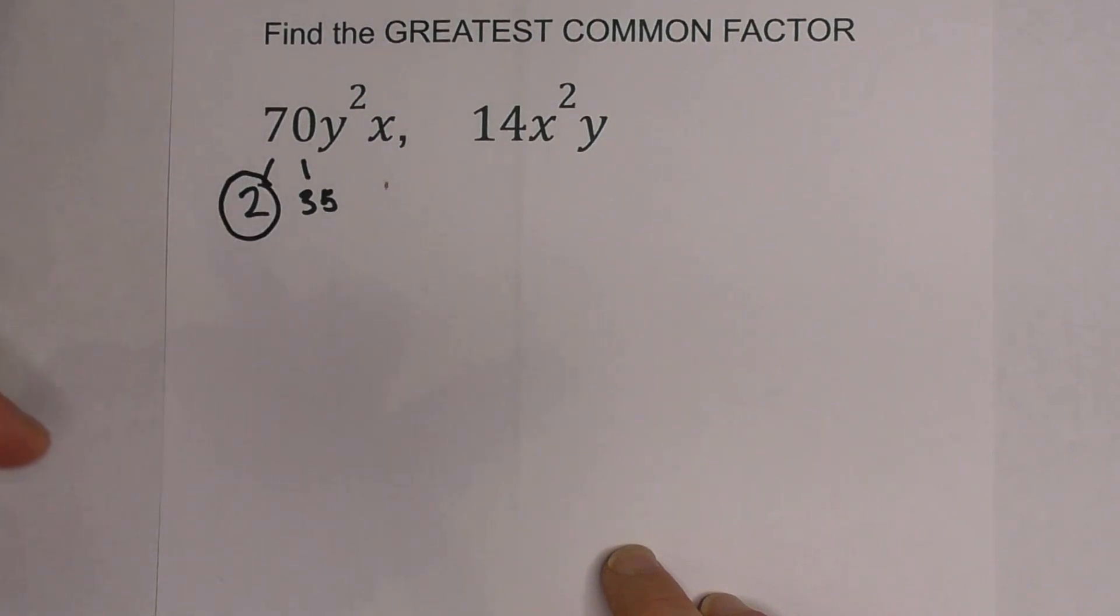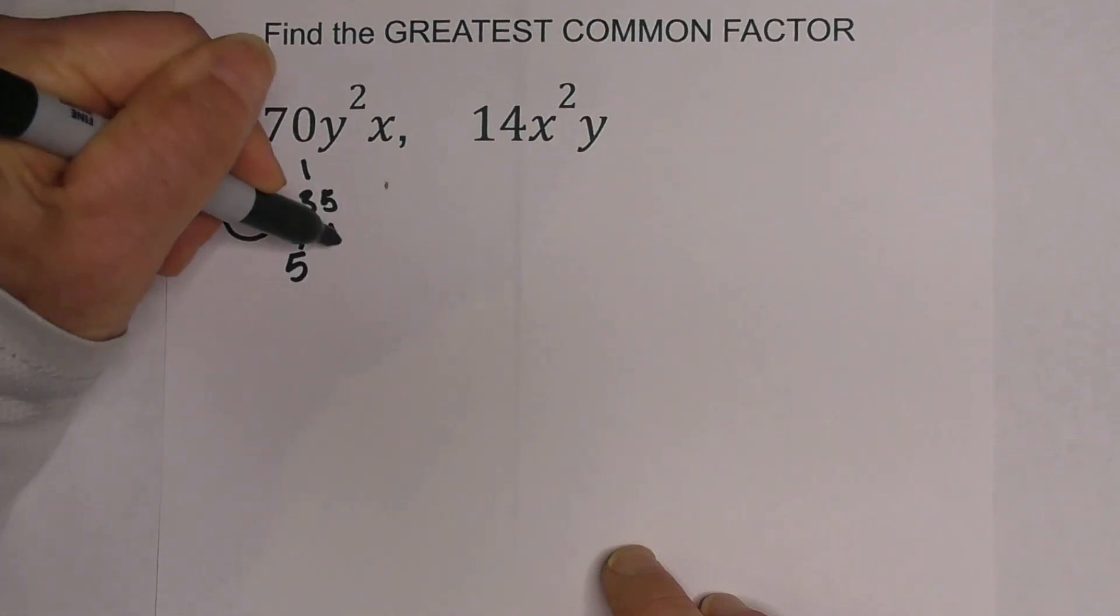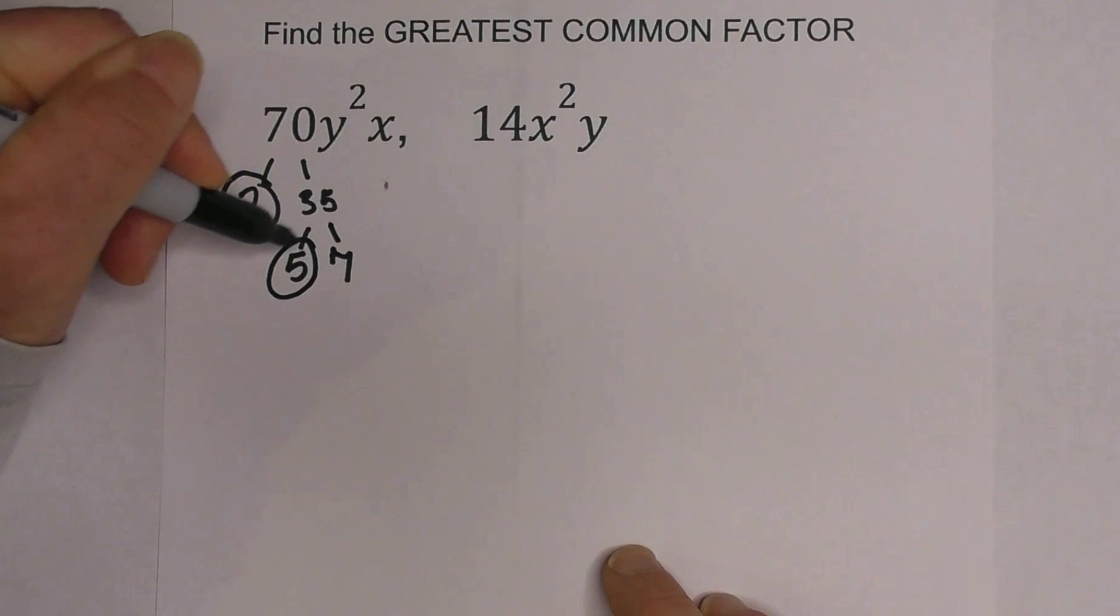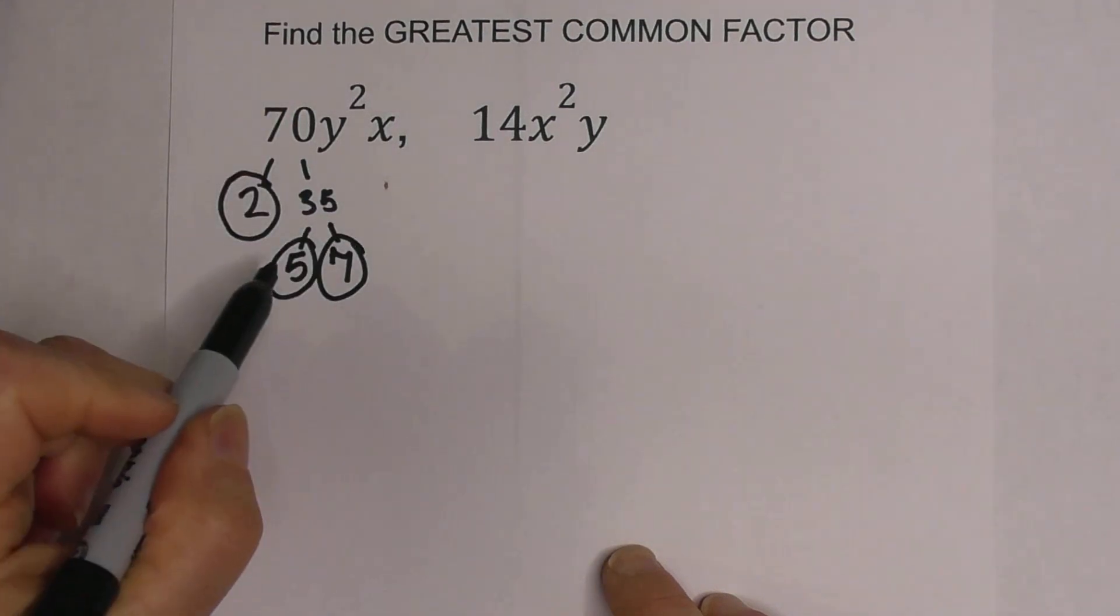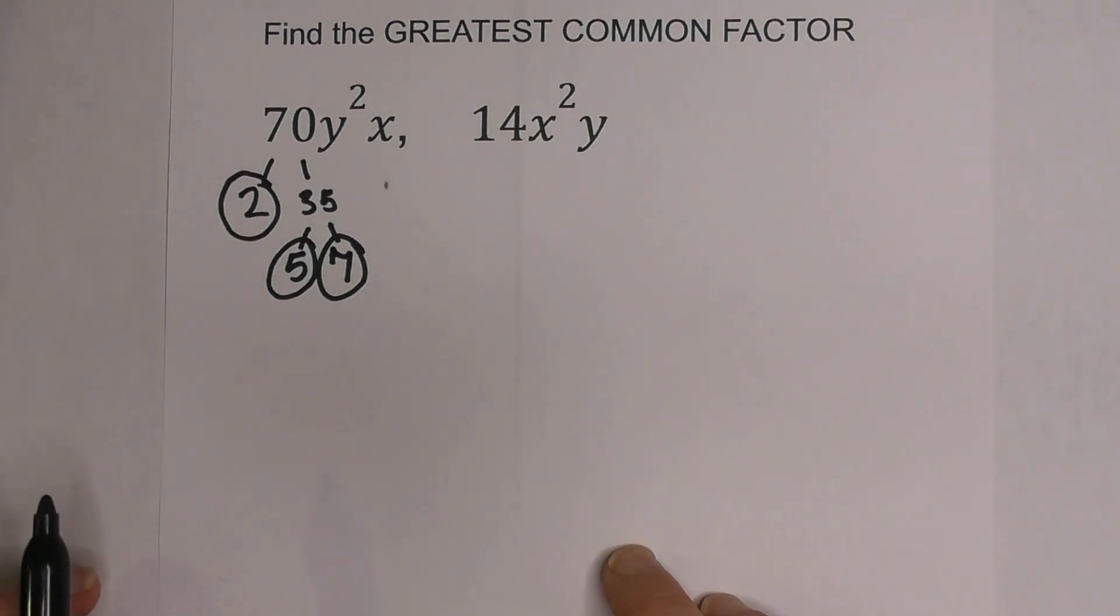If I have a prime number I circle it. Now I need to find 2 numbers that multiply together that equal 35. And 5 times 7 equals 35, and I'm going to circle them because they're prime and now I'm down to prime numbers so I cannot go any further.